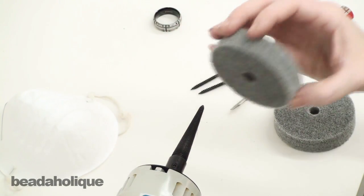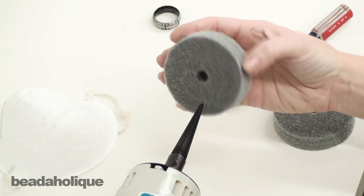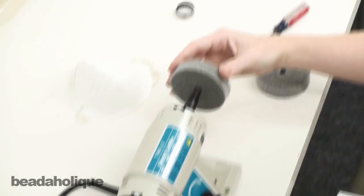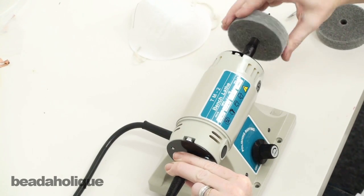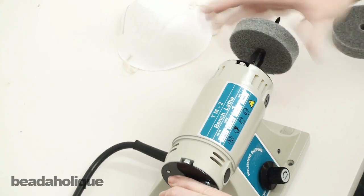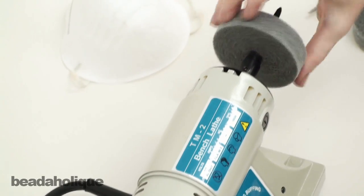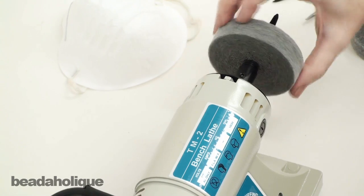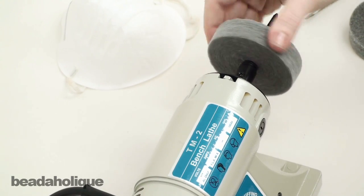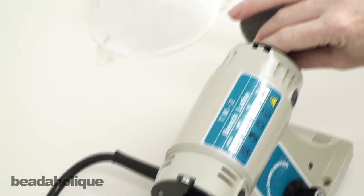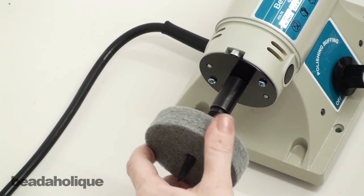We're going to mount our medium grit abrasive wheels, which come with this. The way you're going to do that is you're going to hold right here and then you're going to twist. To do the other wheel, you're going to do the same thing—push that on.